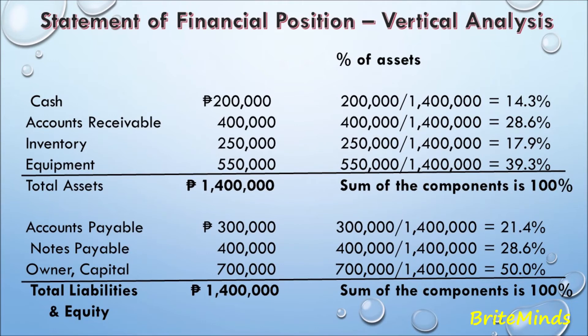Based on our vertical analysis, the largest component of assets is equipment at 39.3%, and the smallest component is cash at 14%. We can also see that 50% of assets are financed by debt — specifically the inventory and equipment are financed by accounts payable and notes payable — and the other half is financed by the owner's equity.